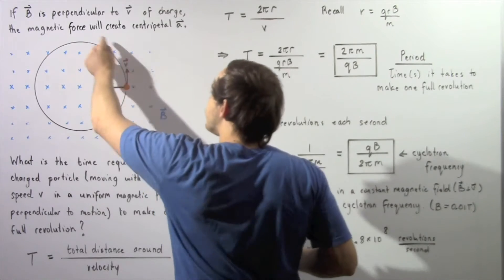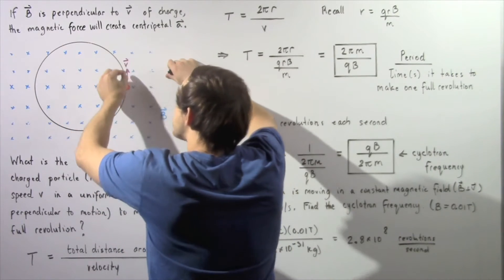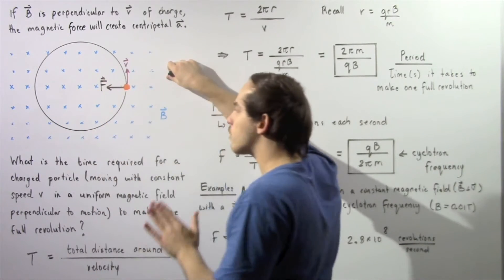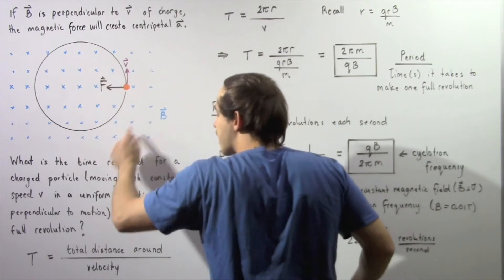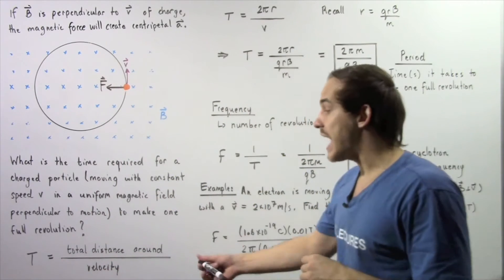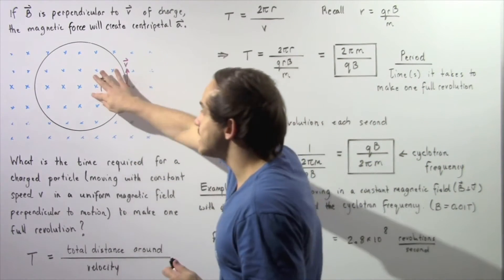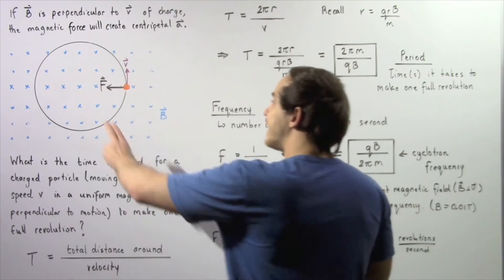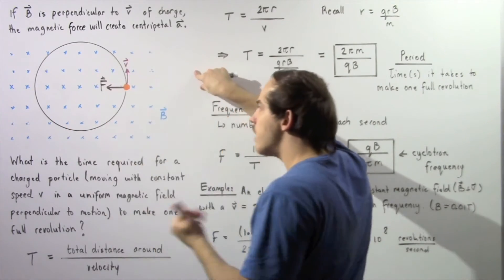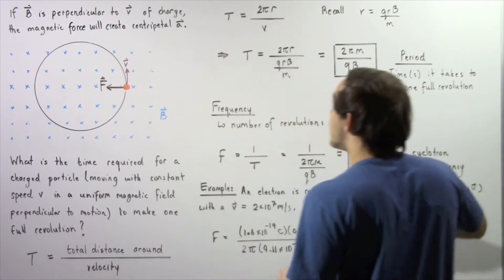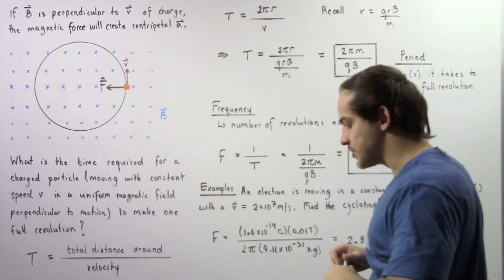The period is given by the total distance traveled around the circular pathway divided by our velocity. So T, the period, is equal to the total distance around this pathway divided by the velocity, giving us the time in seconds. If the radius of this circular pathway is given by lowercase r, then this distance is simply the circumference. So the total distance is 2πr divided by the velocity of our electric charge.